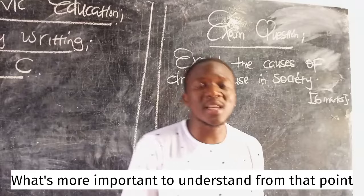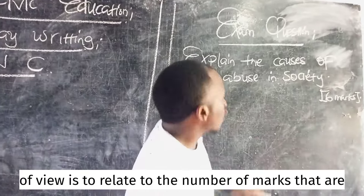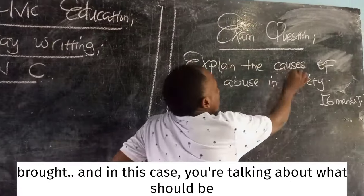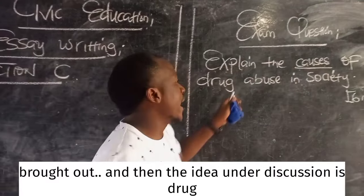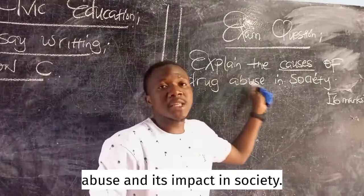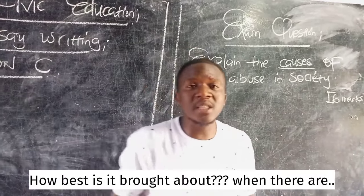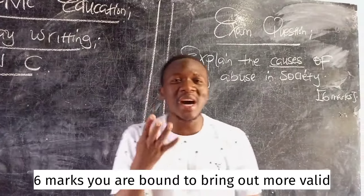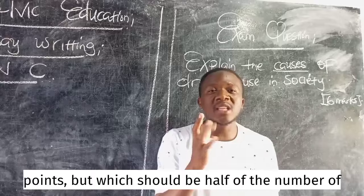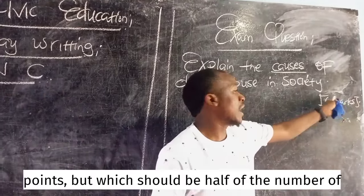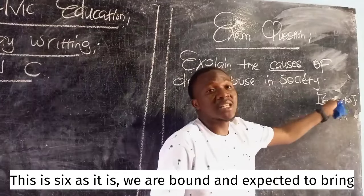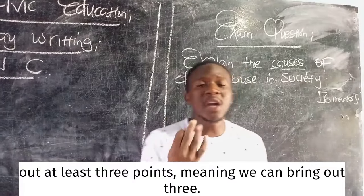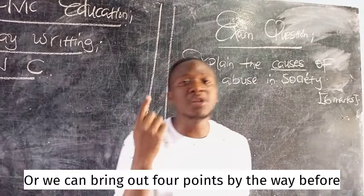What's important to understand is to relate to the number of marks provided. In this case, we are talking about the causes of drug abuse and its impact in society. When there are six marks, you are bound to bring out more valid points, but which should be half the number of marks. Since it is six marks, we are expected to bring out at least three points, or we can bring out four points.